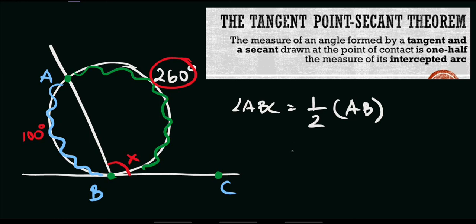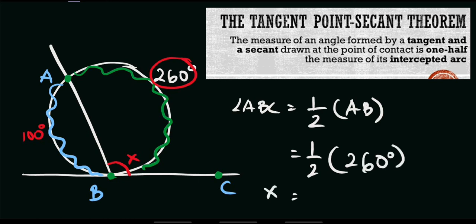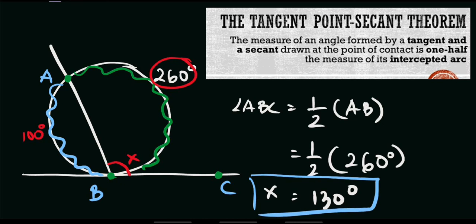Therefore, ABC is equal to one half of arc AB. The value of arc AB, or its intercepted arc, is 260 degrees. So we have one half of 260 degrees. Therefore, the value of X, or ABC, is equal to 130 degrees. That is our final answer. Thank you so much, and God bless.